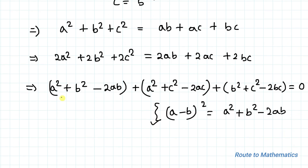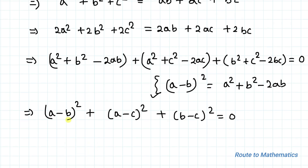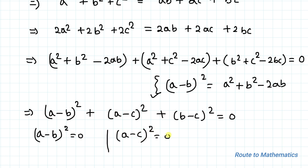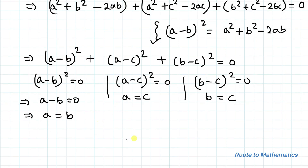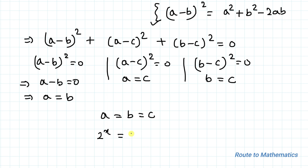Applying this algebraic identity, we can write: (a - b)² + (a - c)² + (b - c)² = 0. Since the sum of squares equals zero, each term must individually equal zero. So a - b = 0, a - c = 0, and b - c = 0, which implies a = b = c. Recalling that a = 2^x, b = 3^x, and c = 5^x, we need 2^x = 3^x = 5^x.